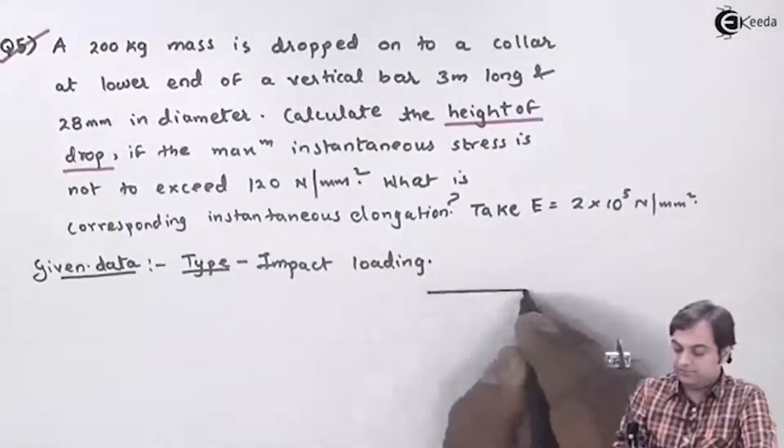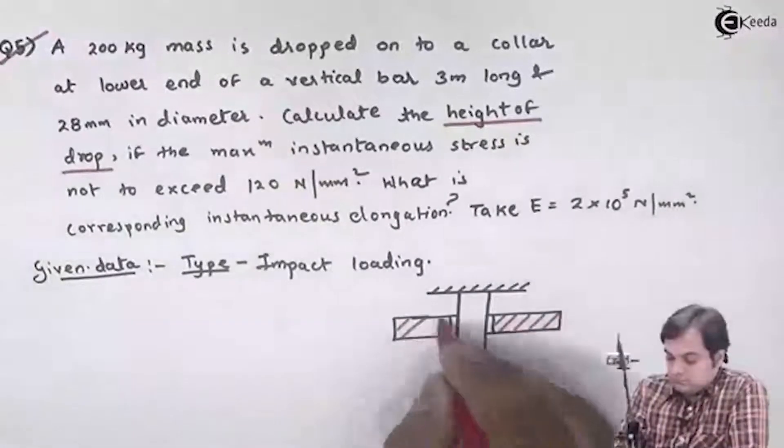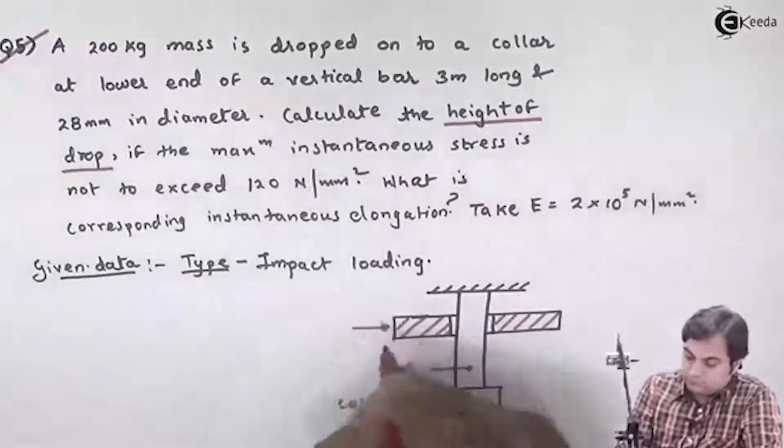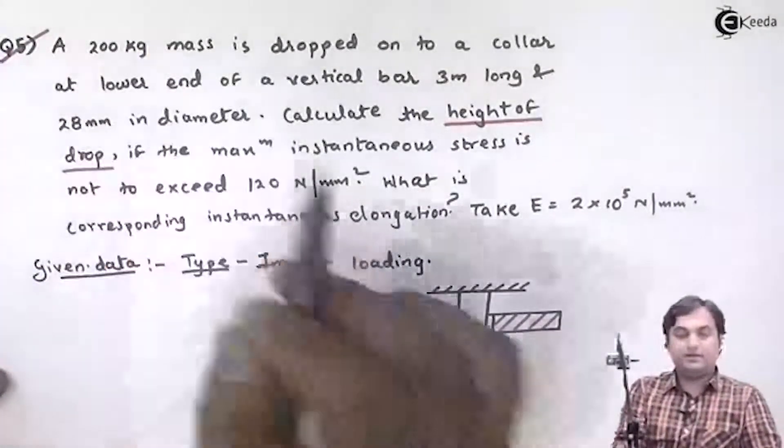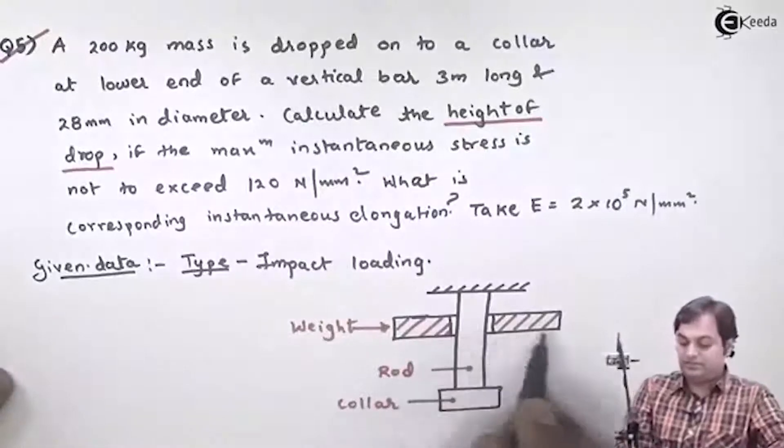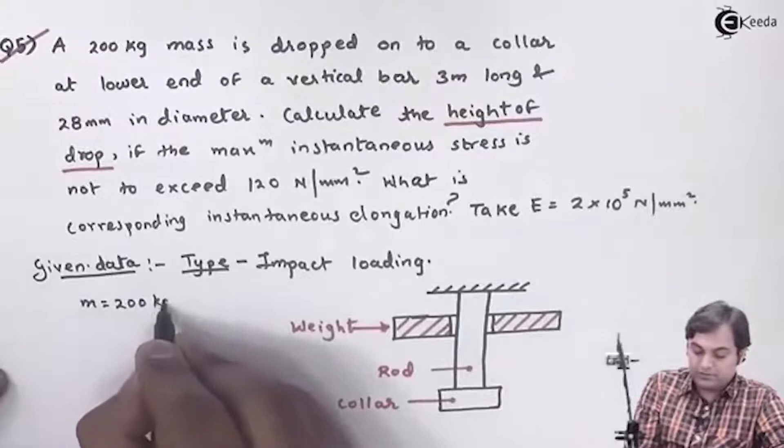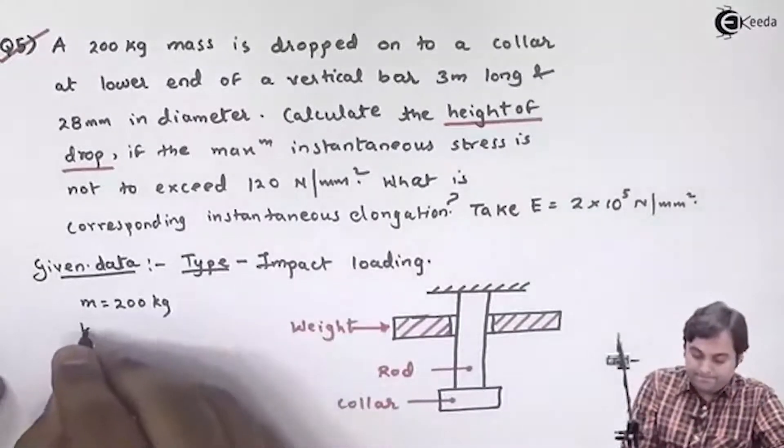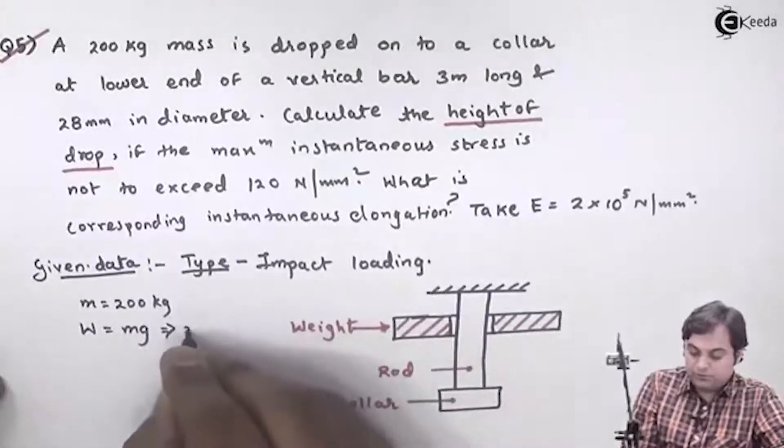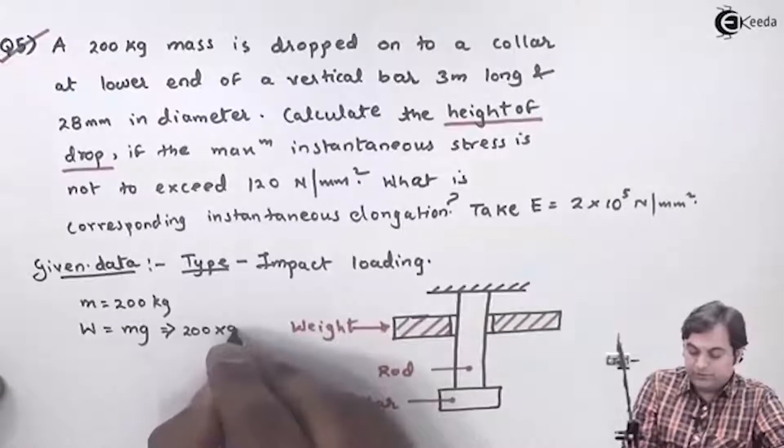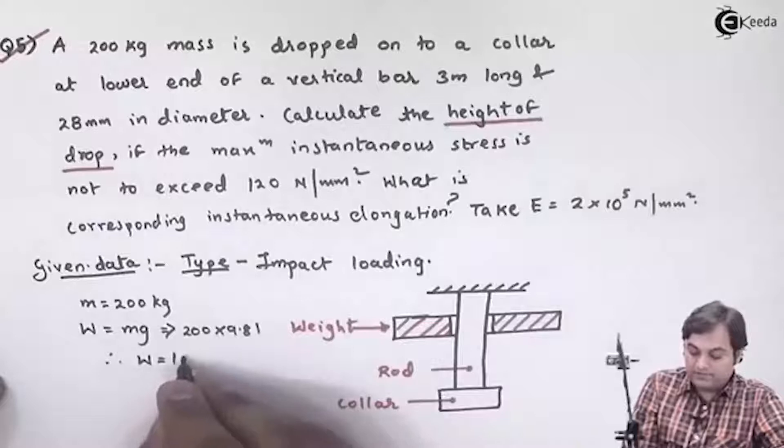I will draw the diagram here. The 200 kg mass is attached here. I will convert it into weight: W = m × g = 200 × 9.81. Therefore, weight = 1962 N.